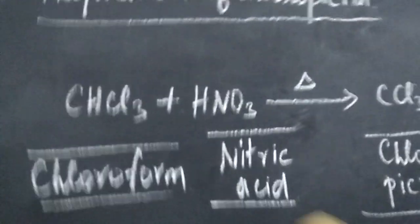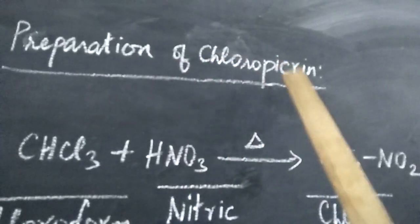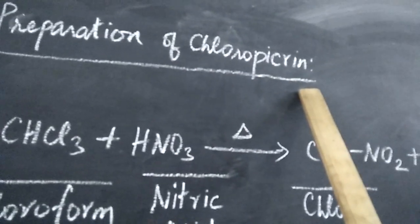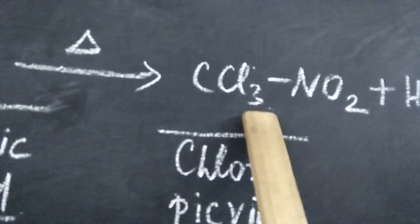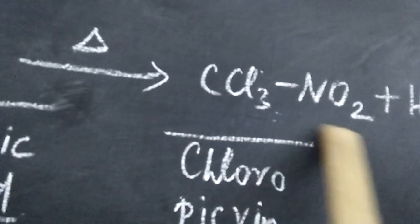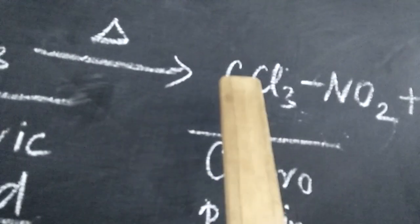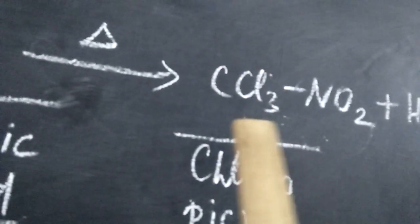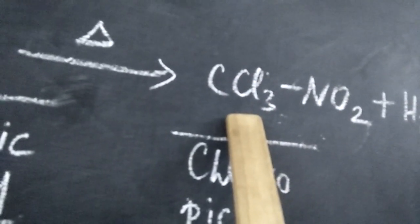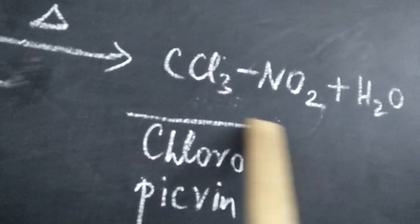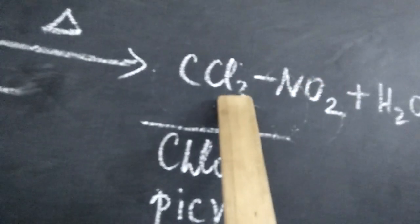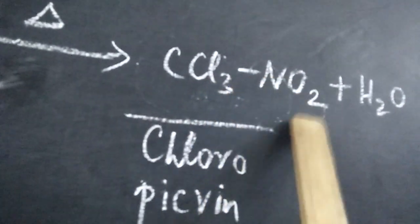Your next compound is preparation of chloropicrin. Chloropicrin is trichloronitromethane. The structure is: trichloronitromethane. NO2 group is called nitro, 3 chlorine atoms are trichloro. Trichloronitromethane. Why methane? Because 1 carbon is present. Instead of CH4, the 4 hydrogen atoms, 3 chlorine atoms are present instead of 3 hydrogen atoms, and 1 nitro group is present instead of 1 hydrogen atom. It is actually methane where the 4 hydrogen atoms are substituted by chlorine atoms and nitro group.